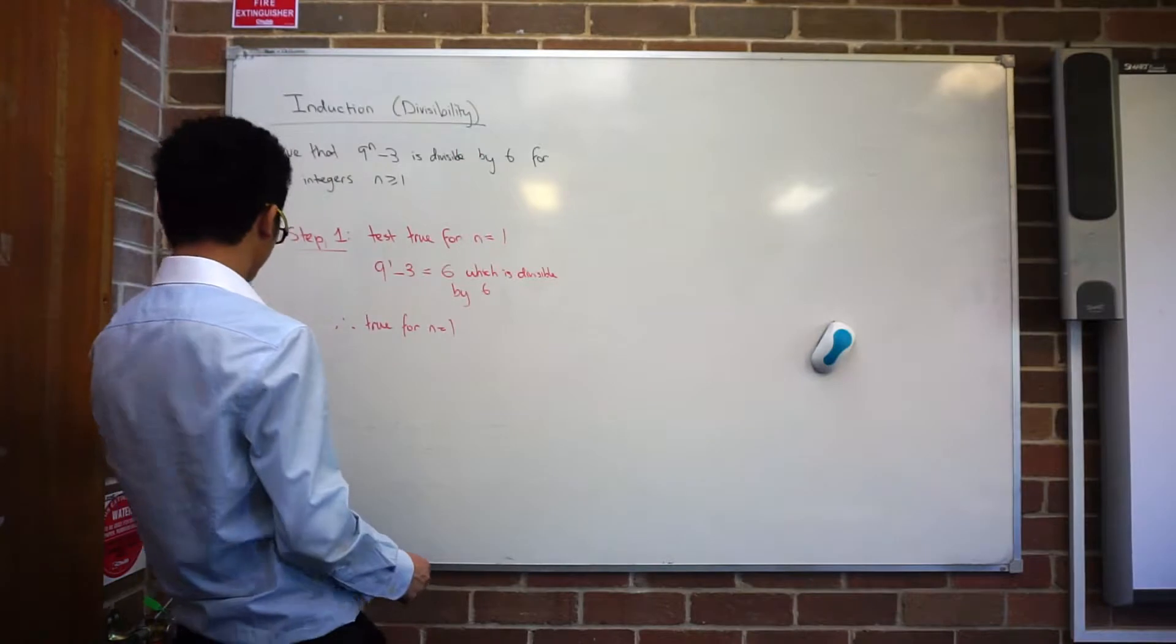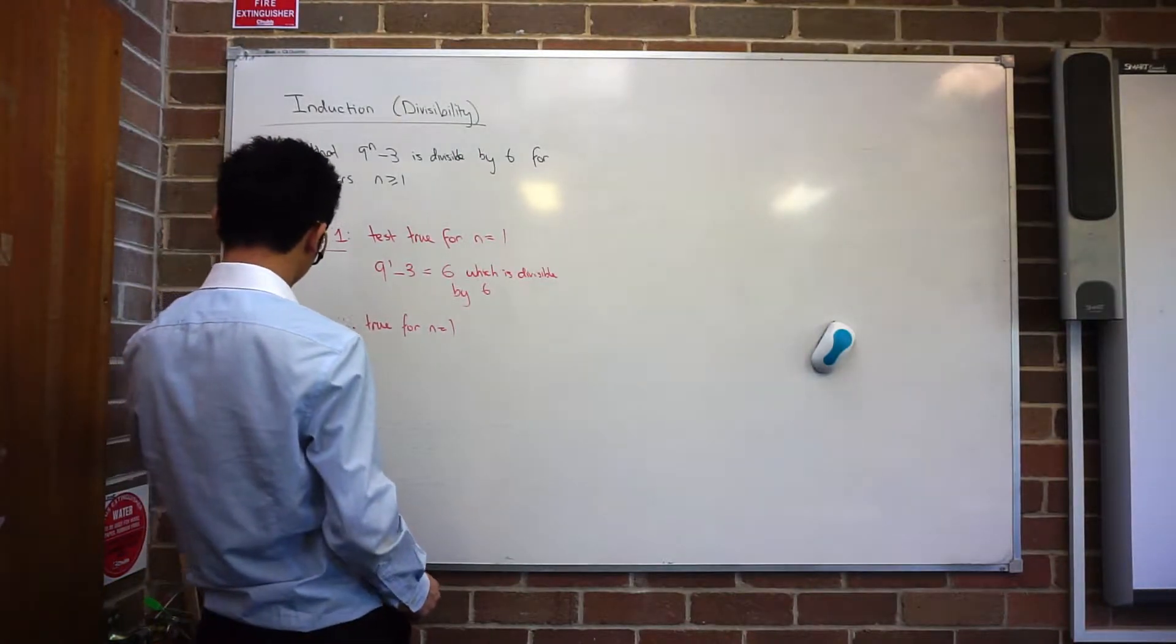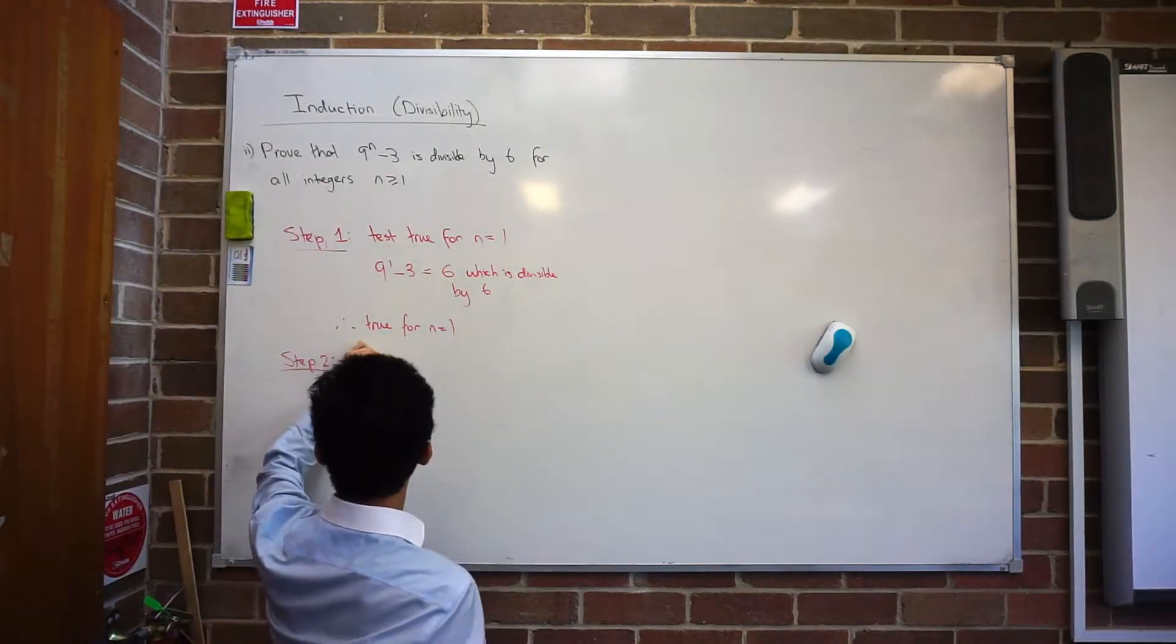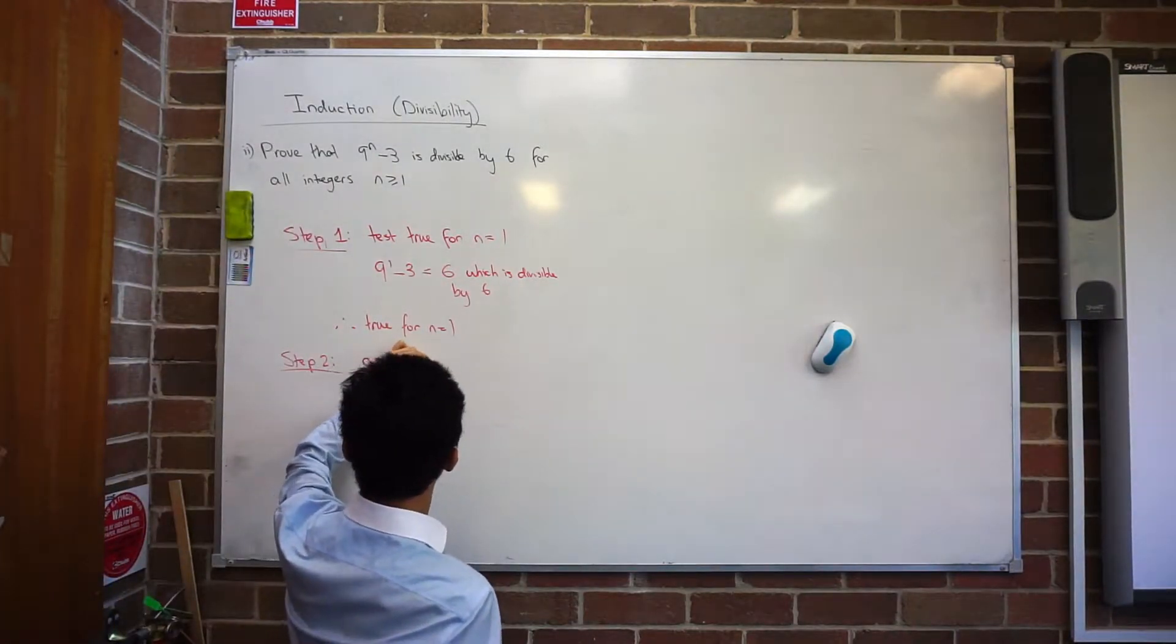Second step, Ethan? So assume true for n equals to k. Assume true for n equals to k.